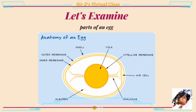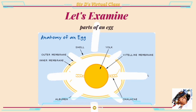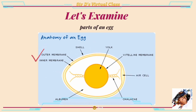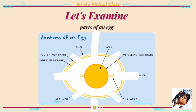Let us examine the parts of an egg — the anatomy of an egg. As you can see, an egg has its parts: we have the shell, outer membrane, inner membrane, the albumin, the shell sac, the air cell, the vitelline membrane, and lastly the yolk. Let us discover one by one what these parts are all about.